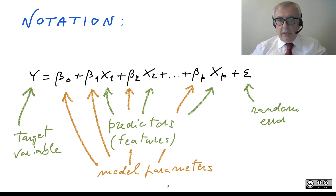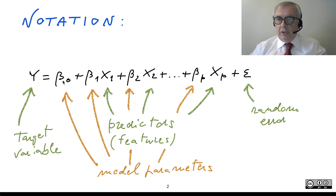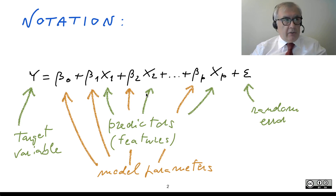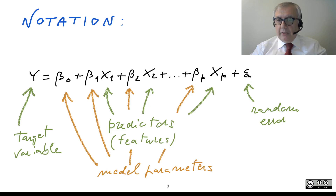Specifically beta 0, beta 1, beta 2, beta P. Beware that we have P predictors, but P plus 1 parameters, because there is also the constant value. Finally, we cannot give for granted that the model will explain perfectly the data, and so we have a random error that we call epsilon.